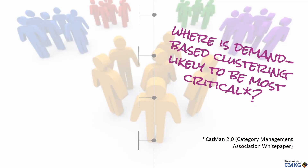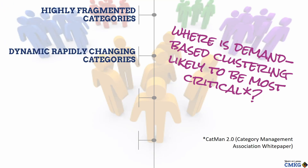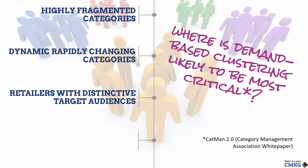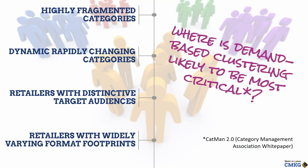Here are some examples of when demand-based assortment clustering is likely to be most critical: highly fragmented categories, dynamic rapidly changing categories, retailers with distinctive target audiences, and retailers with widely varying format footprints.